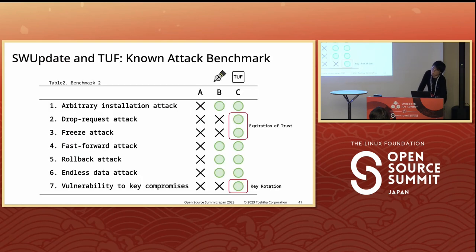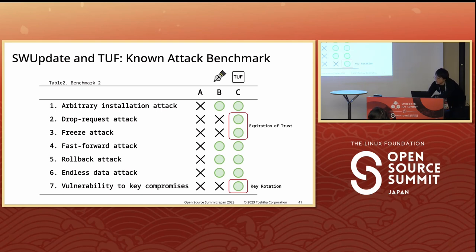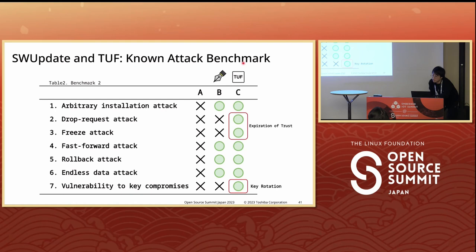Let's update our table. C represents the new result of combining SW Update with TUF. As shown, we've achieved resistance against the potential attacks.